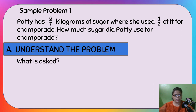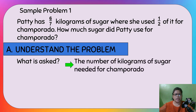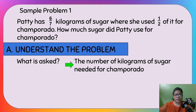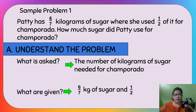What is asked? It's asking for the number of kilograms of sugar needed for champorado. What are given? Given are 6/7 kilogram of sugar and one half. Note: it is one half of the 6/7 of sugar that we are looking for — not one half kilogram.